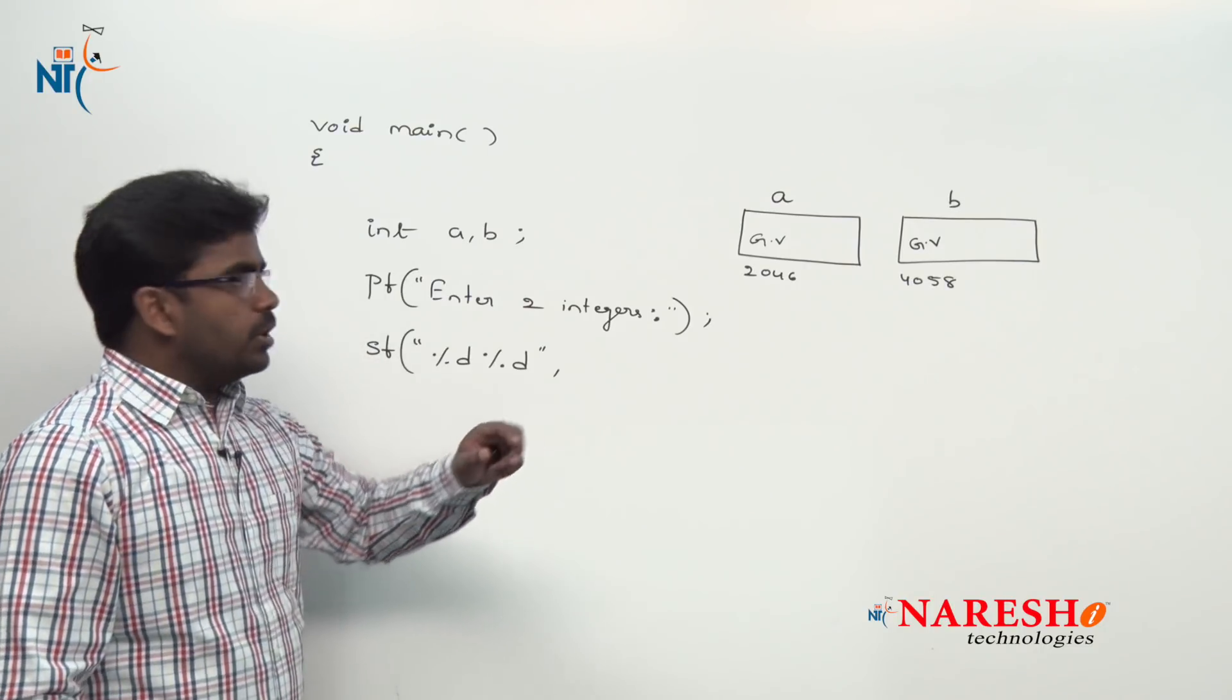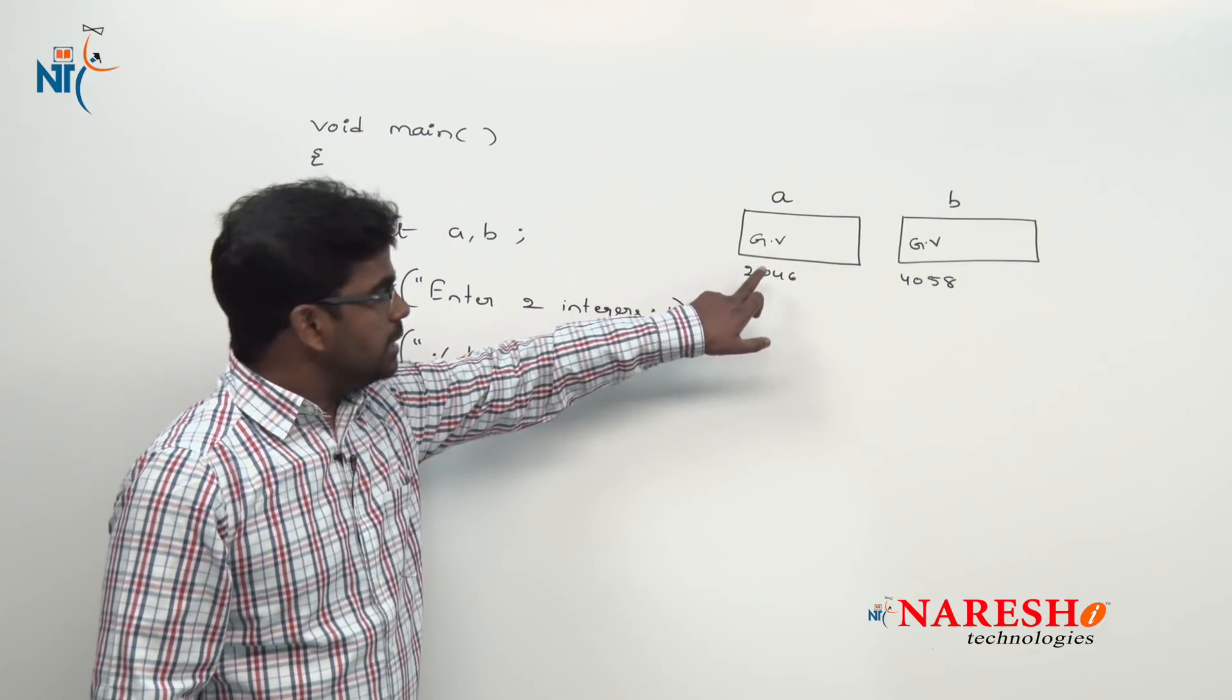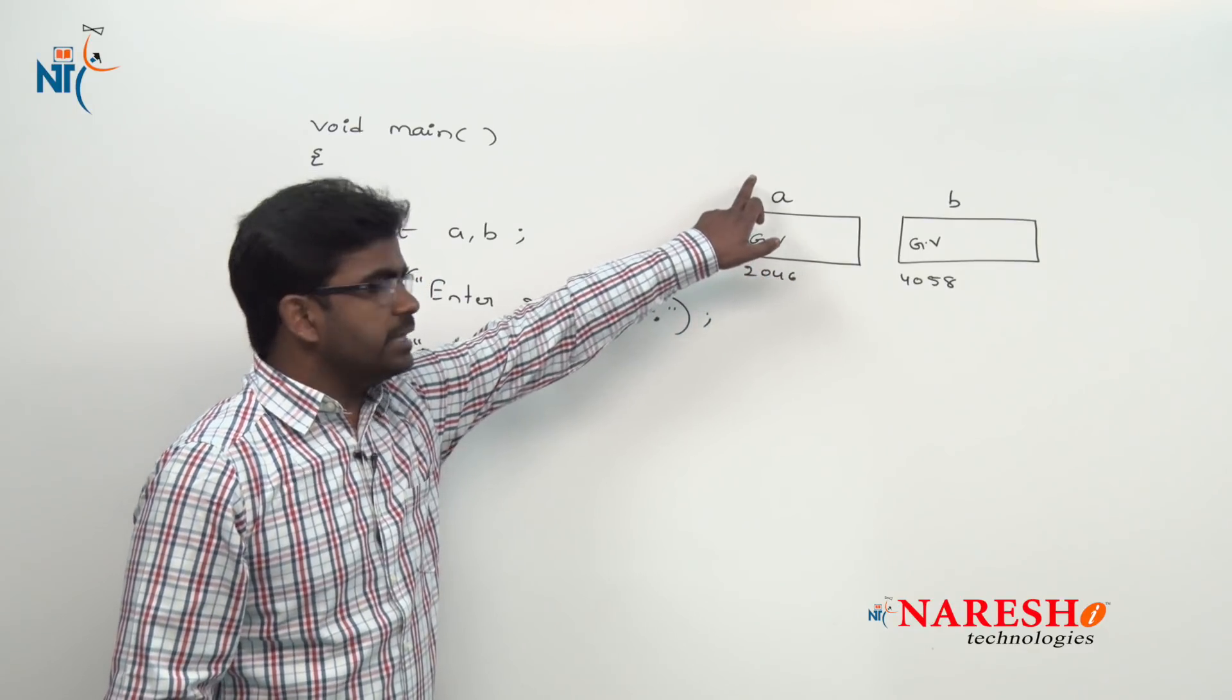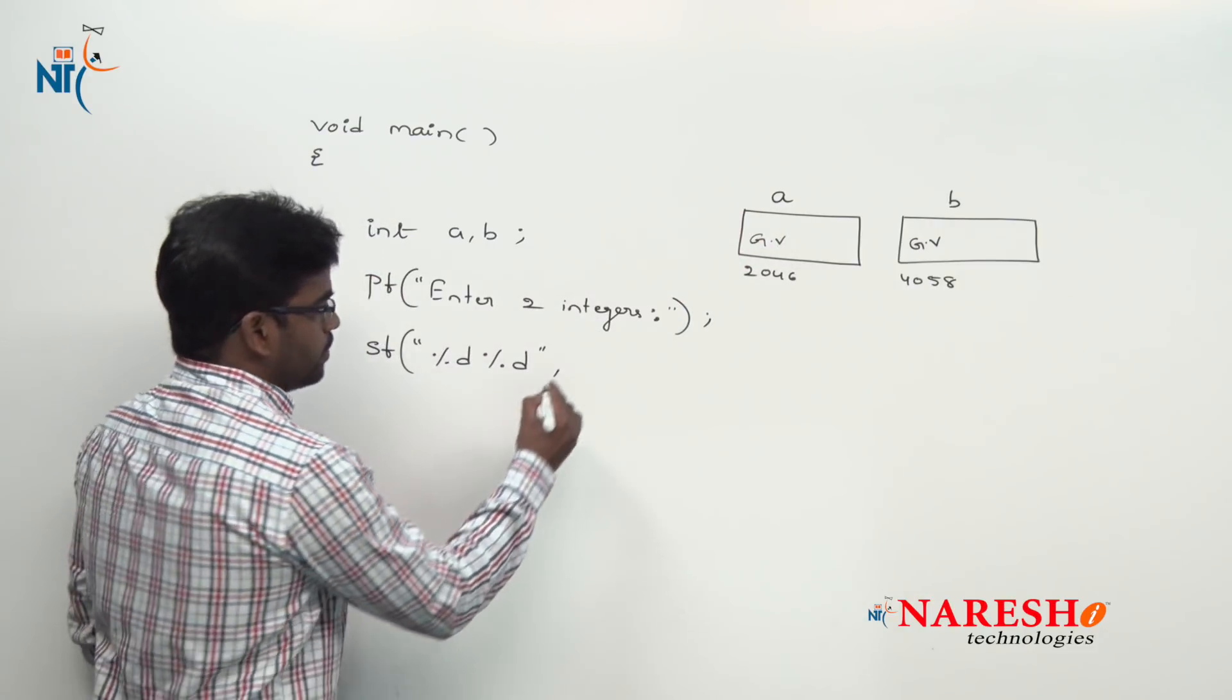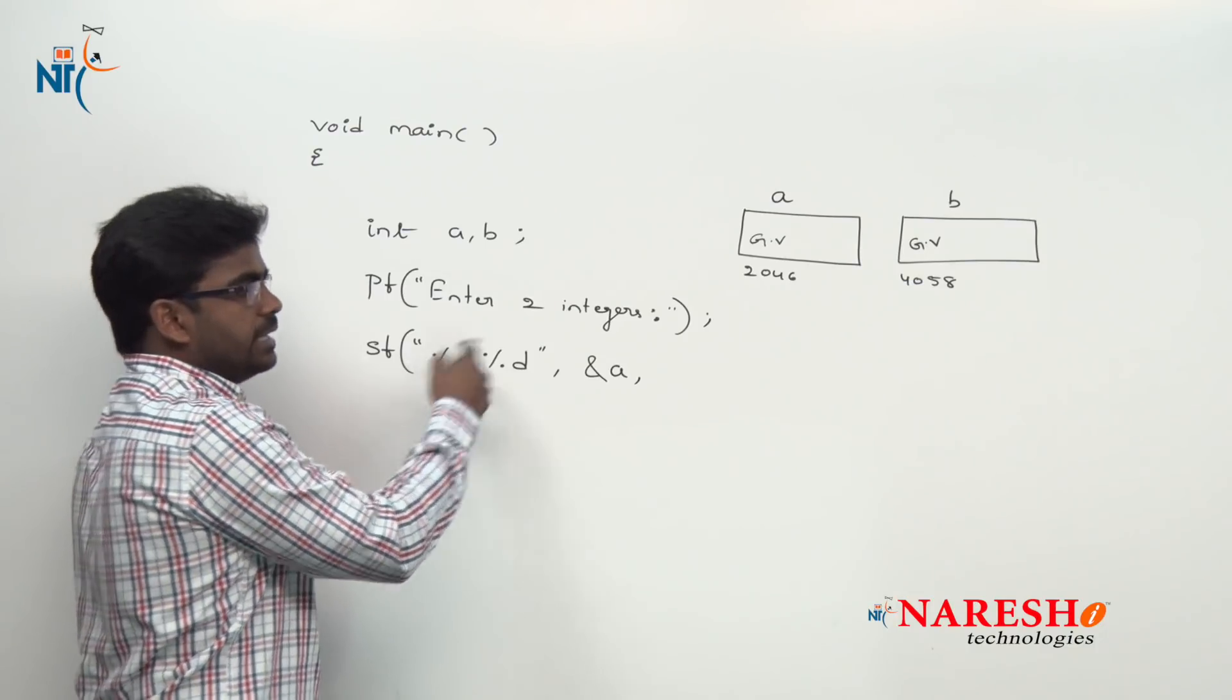First one I want to collect into this location. This is the address we have to give. This address is of variable a. So address of a. The first one will be collected into a. Suppose if they enter 10, garbage value is replaced with 10.